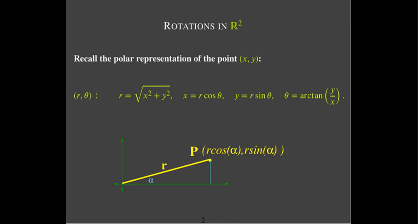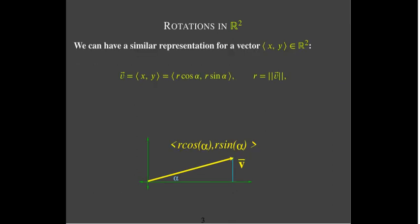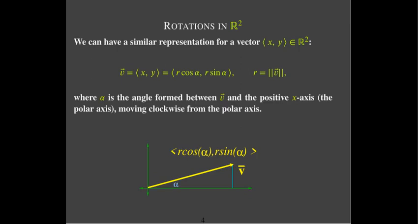We can have something very similar with vectors. If you have a position vector — so its tail is at the origin — the length of the vector is going to be R. The angle made with the positive x-axis is still going to be called alpha. The components of that vector can be written as R times cosine alpha, because that is the adjacent side. And the length of the opposite side tells us how far up we're going, so that would be our second component, R sine alpha.